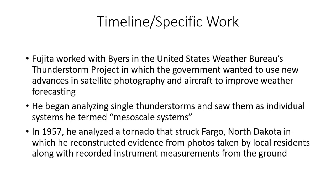Fujita worked with Byers in the US Weather Bureau's thunderstorm project, in which the government used new advances in satellite photography and aircraft to improve weather forecasting. Fujita began analyzing individual thunderstorms and coined the phrase 'Mesoscale Systems.' In 1957, he analyzed a tornado that struck Fargo, North Dakota, reconstructing the evidence from photos taken by local residents along with recorded instrument measurements — acting as a damage pattern detective.